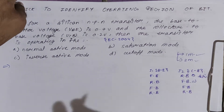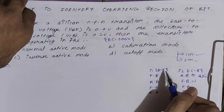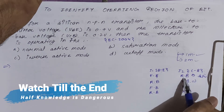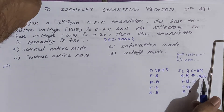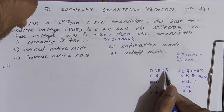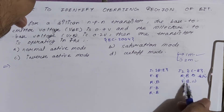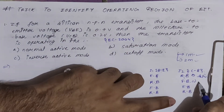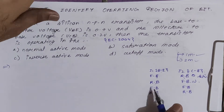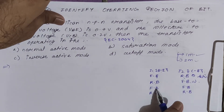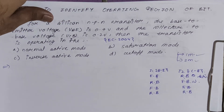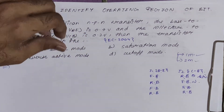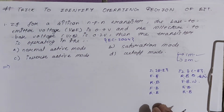For all such problems, we use this key table. If the base-to-emitter junction (J1) is forward biased and the collector-to-base junction (J2) is reverse biased, the transistor operates in the forward active region. If J1 is reverse biased and J2 is forward biased, it is reverse active. If both junctions are forward biased, it is saturation. If both are reverse biased, it is cutoff.